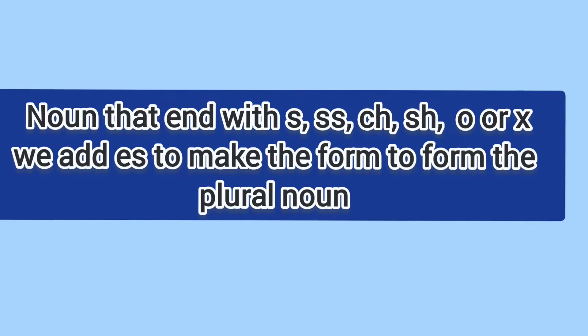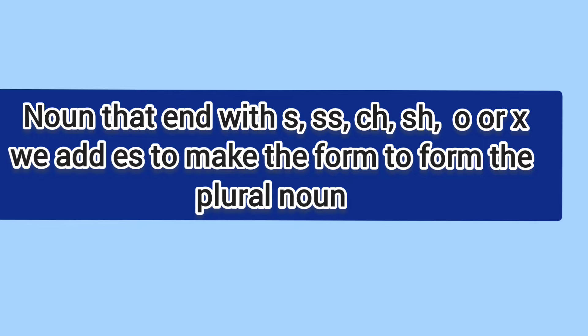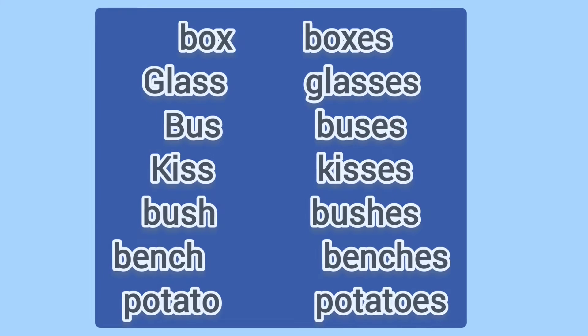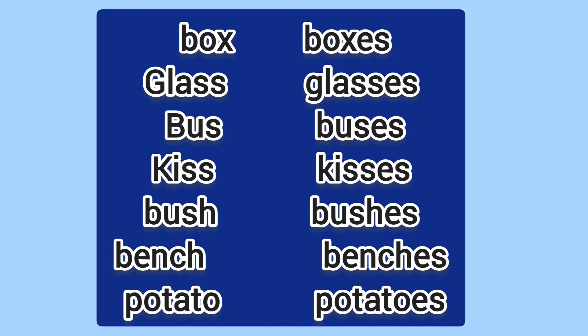By adding es. In nouns which end with s, double s, ch, sh, o, or x, we add es to form the plural noun. For example: box, boxes; glass, glasses; bus, buses; kiss, kisses; bush, bushes; bench, benches; potato, potatoes.